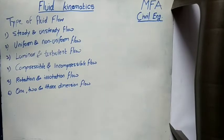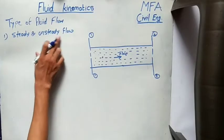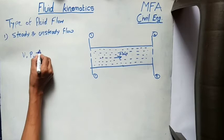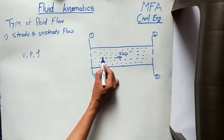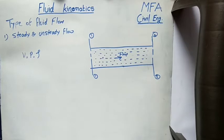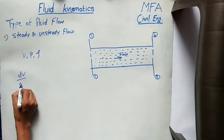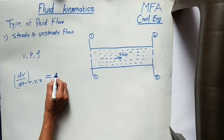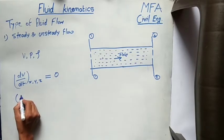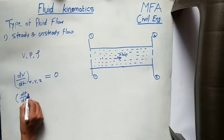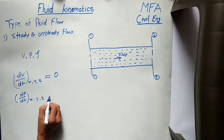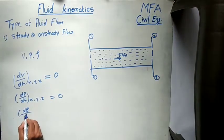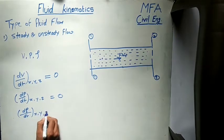First is steady and unsteady flow. Steady flows are those in which properties like velocity, pressure, and density at any point in the fluid flow remain constant and do not change with respect to time. In mathematical form: the rate of change of velocity with respect to time in any direction (x, y, and z) is equal to zero. Similarly, the rate of change of pressure with respect to time in any direction (x, y, z) is zero, and the rate of change of density with respect to time in any direction (x, y, z) is also zero.